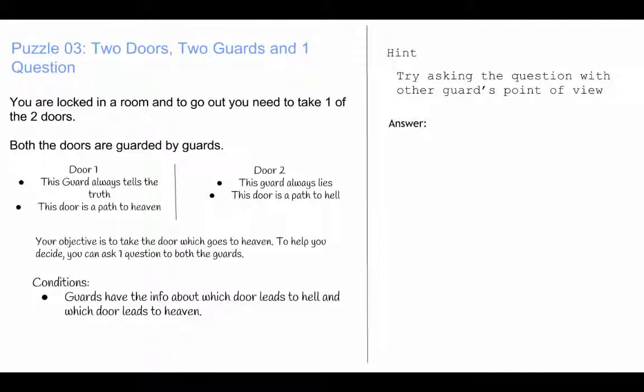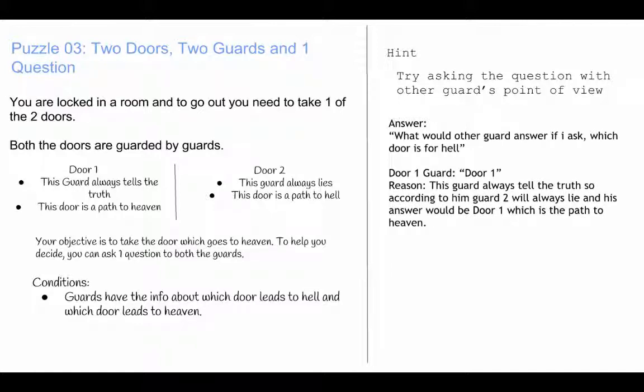So the answer is, what would other guard answer if I ask, which door is for hell? The guard at the door one will reply door one. The reason is, this guard always tells the truth. So according to him, guard two will always lie. And his answer would be door one, which is path to the heaven.